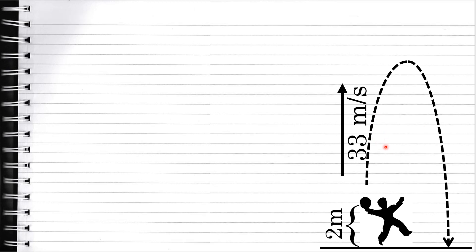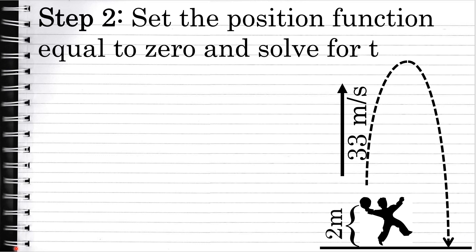In this problem, we're not necessarily concerned with how high the ball is after 2 seconds. We want to know the velocity when the ball hits the ground. But before we can figure out the velocity when the ball hits the ground, we need to know how long it takes for the ball to hit the ground. Therefore, step 2 is to set the position function equal to 0 and solve for t — this tells us how much time it takes for the ball's position to reach 0, meaning how much time it takes for the ball to hit the ground.